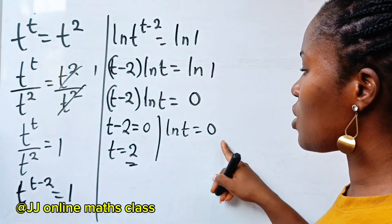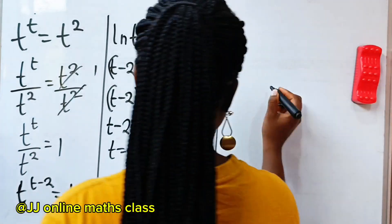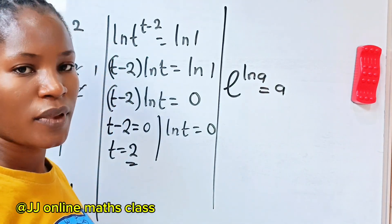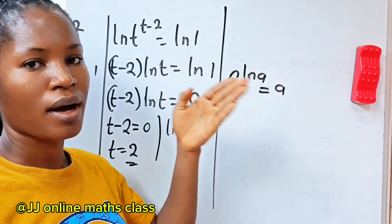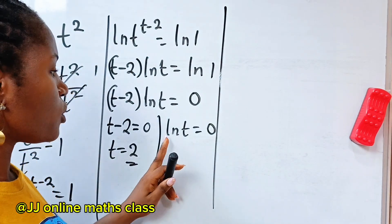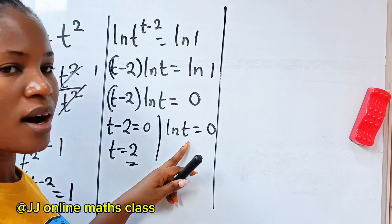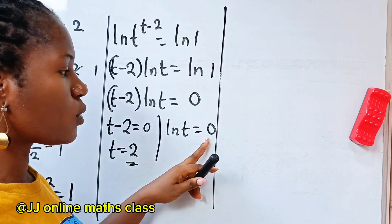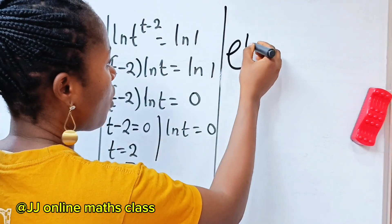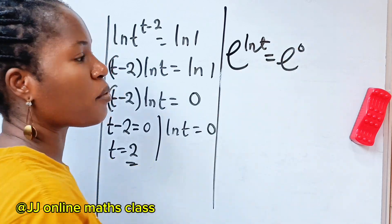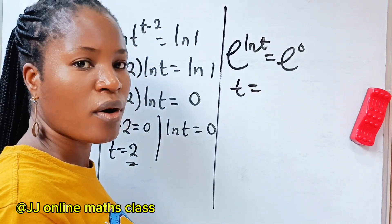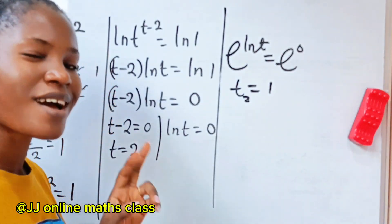Now let's work on ln t is equal to 0. Remember that e to the power of ln a is equal to a — e to the power of the natural log of any number equals that number. So we introduce base e to both sides: e to the power of ln t is equal to e to the power of 0. This gives us t is equal to 1, since e to the power of 0 is 1. That's our second value of t.